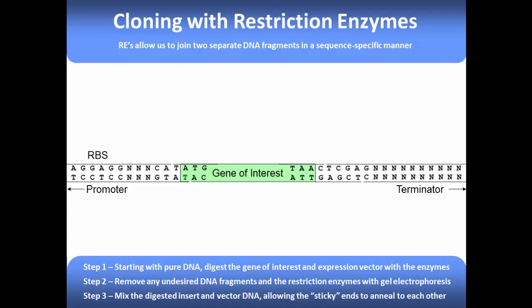Once we mix these sequences, the sticky ends begin to anneal — TA finds AT and TCGA finds AGCT. Due to this sequence specificity, our gene of interest is guaranteed to go into the new plasmid in a single orientation. However, the sticky ends form only weak hydrogen bonds between base pairs, so before forming a more permanent bond we need to reseal the cut in the phosphodiester backbone that was made by our restriction enzymes.